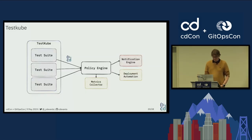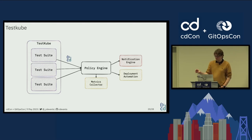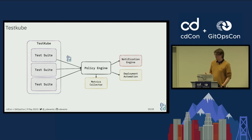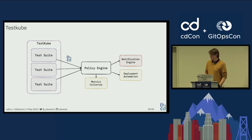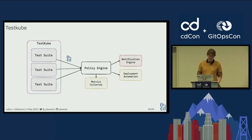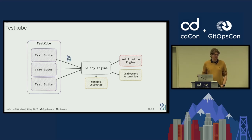For TestCube, you could imagine producing test events and applying policy based on what is happening in your test suites — deciding, for instance, that you want to notify someone about a failing test. Or if you're running smoke tests in an environment after a deployment, you could send that to your deployment automation to decide whether to keep that deployment or roll back. It can also be useful for collecting metrics about your test execution history.